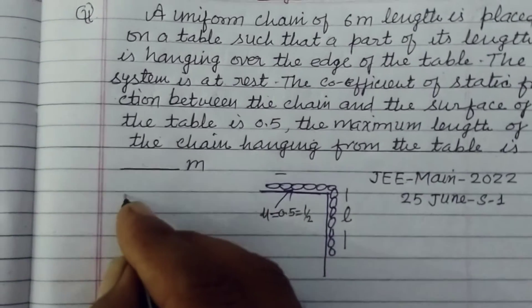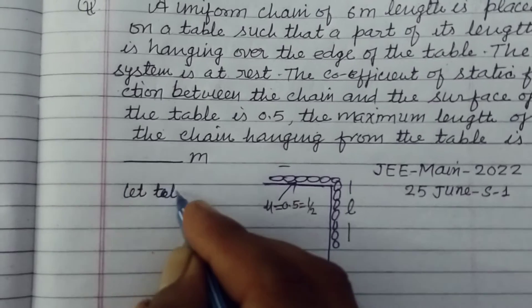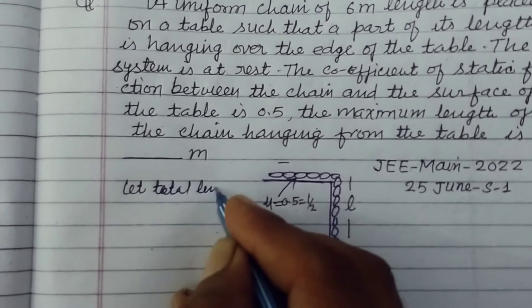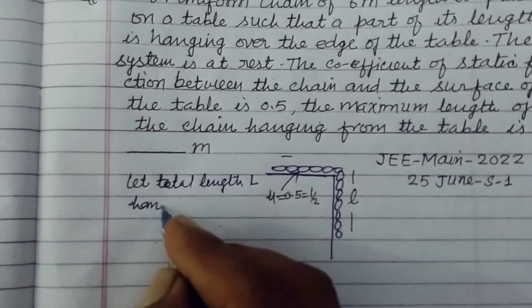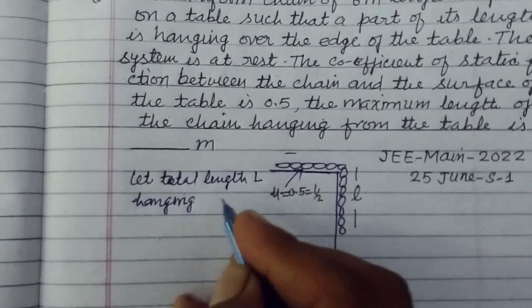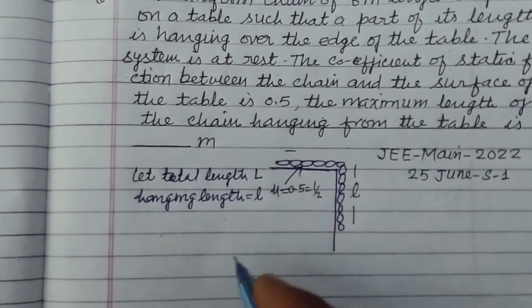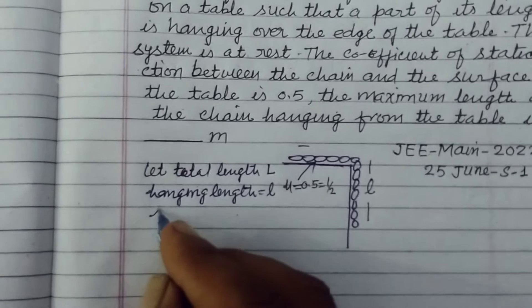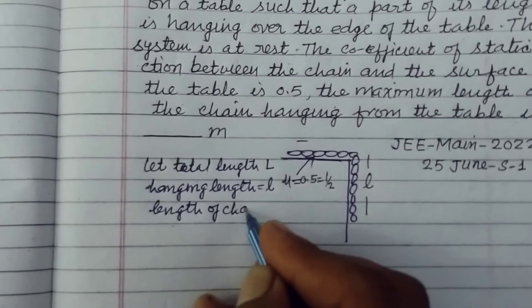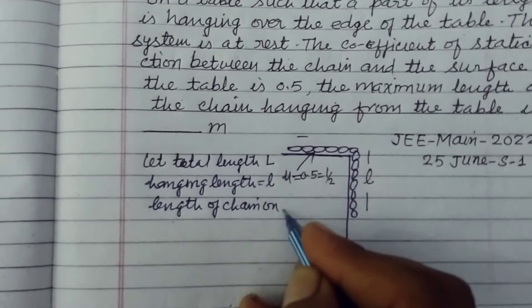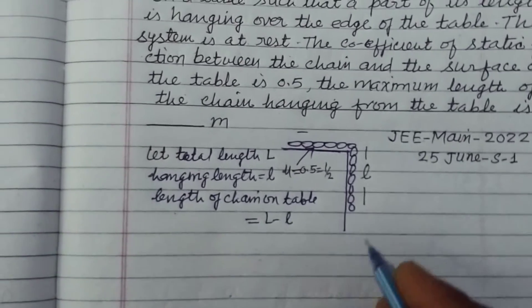So let total length be L and hanging length be small l. Therefore, length of chain on table is equal to L minus l.